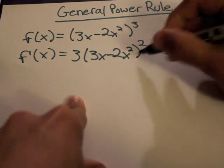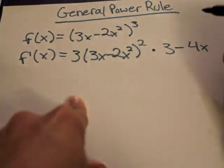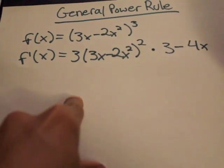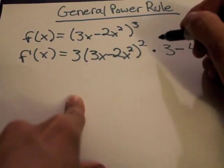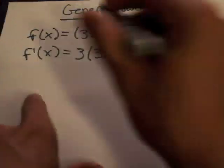So 2 times 2 is 4, giving us 4 times x. Then subtracting 1 from the original exponent gives 4x to the 1, which is the same as 4x. And that is the derivative of this function.